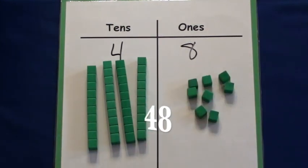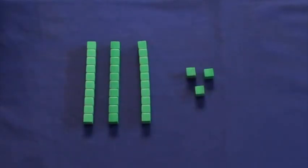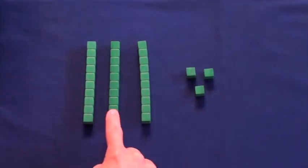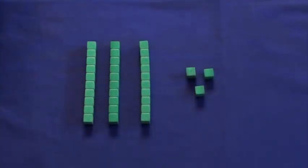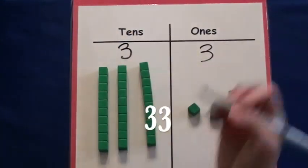This time, let's look at the base ten blocks and practice writing the number. There are three tens. Ten, twenty, thirty, and three ones. Thirty-three.